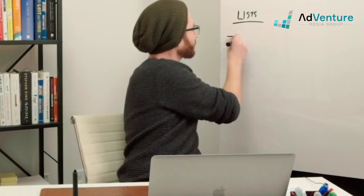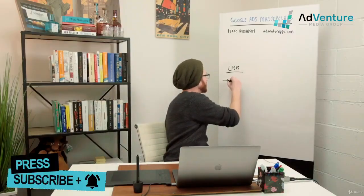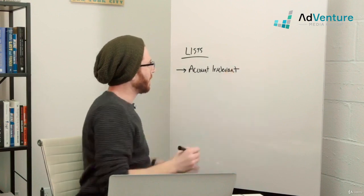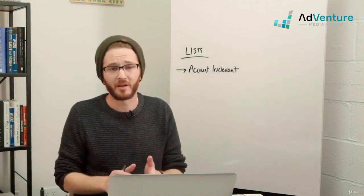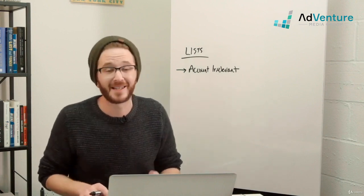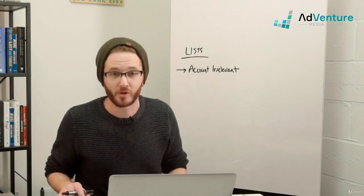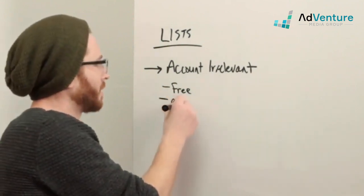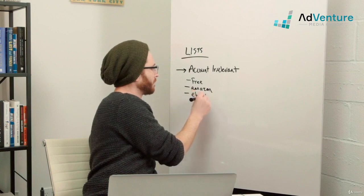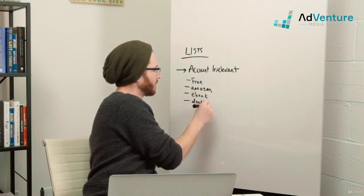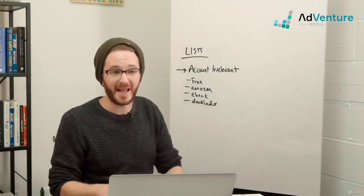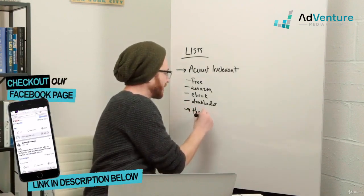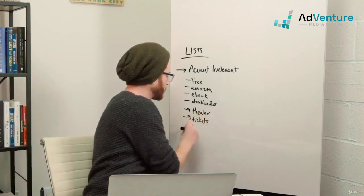The most popular form of list I suggest you create right away is what I call an account irrelevant list, and you can label it as such. Your account irrelevant negative keyword list consists of negative keywords that you never want to show up for. Good examples include 'free', 'Amazon', 'ebook', or 'downloads'. For example, one of our clients is AMC television networks, which is often confused with AMC movie theaters, so we'd add terms like 'theater', 'tickets', or 'showtimes' as negatives.